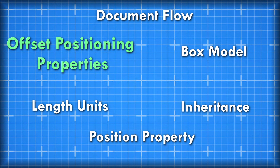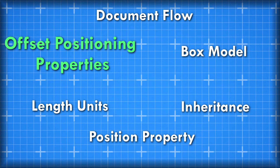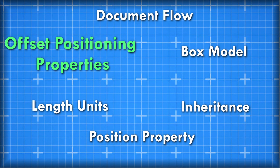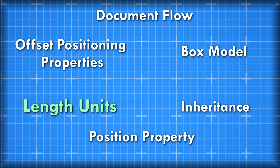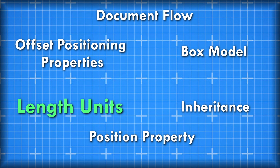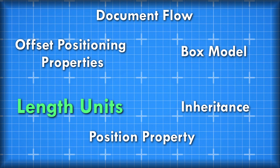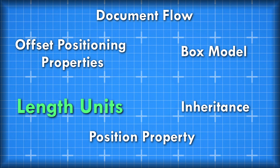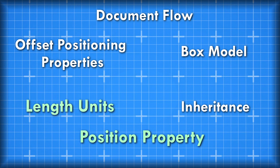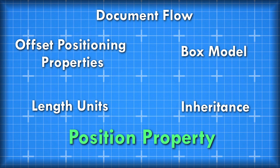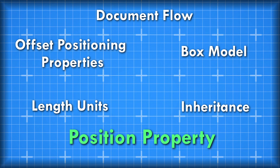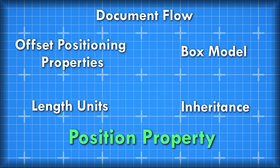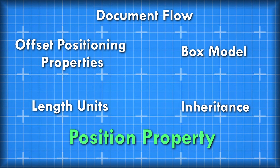Next up you need to understand the offset positioning properties. These include the top, bottom, left and right properties which set the position offset of an HTML element. The third concept is length units — basically properties can accept different length units which are categorized into absolute and relative types. We will scratch the surface of this topic in this episode but will dive deeper in the future. Another very important concept is the position property, which determines an HTML element's placement within the document flow. We will be explaining this property in detail in this video.